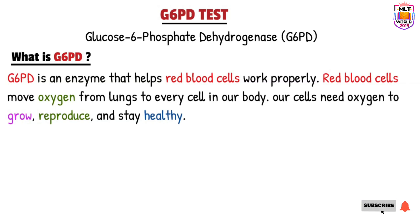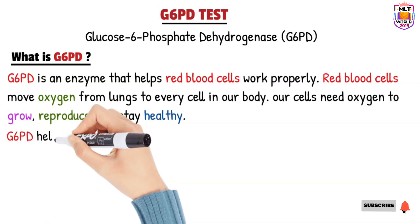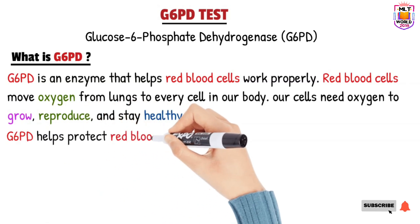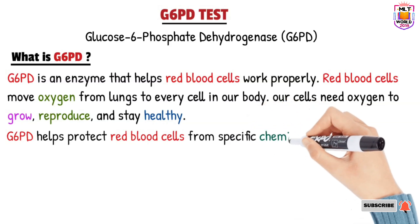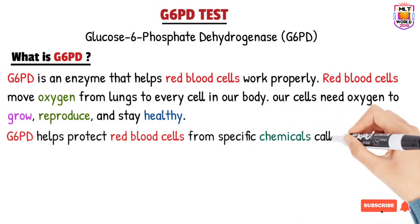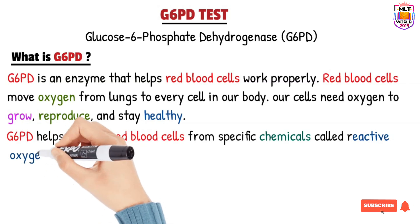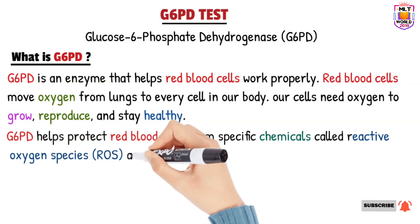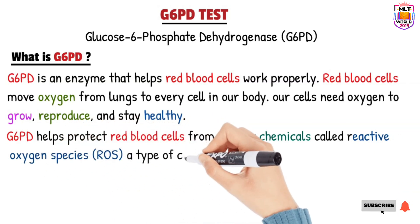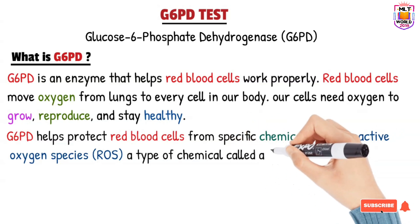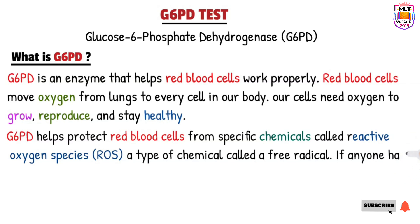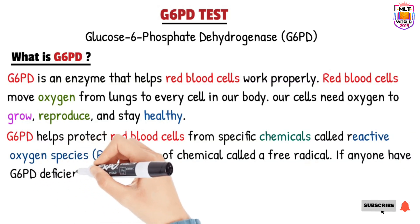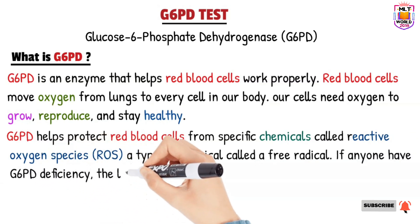So what is the function of G6PD? G6PD actually protects our red blood cells from a free radical chemical called reactive oxygen species. If anyone has a low level of G6PD, or G6PD deficiency, then red blood cells will be at risk.